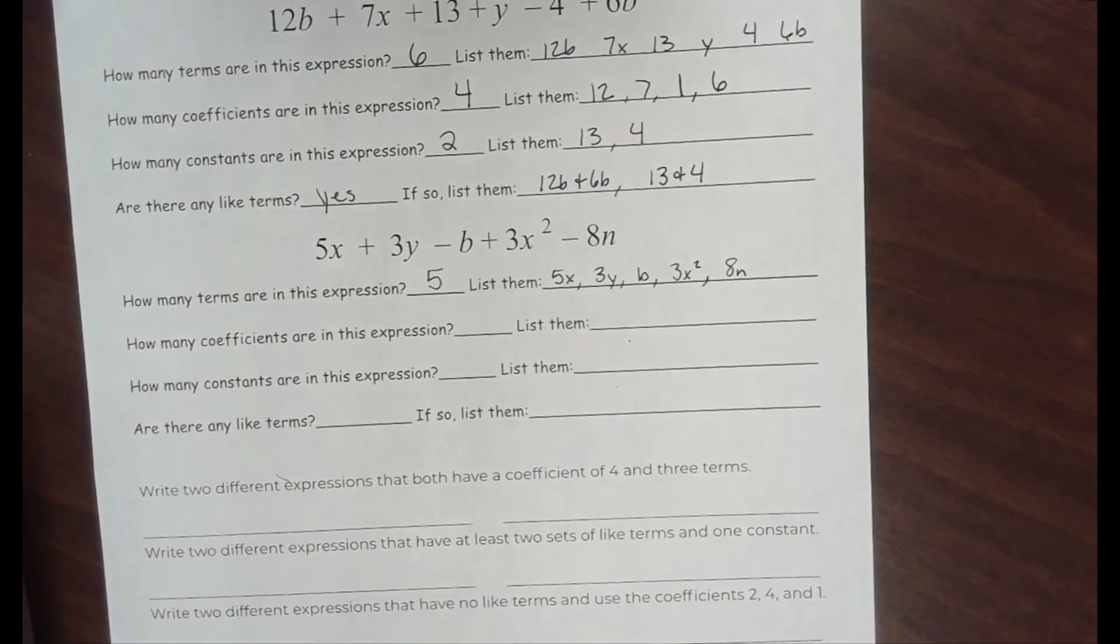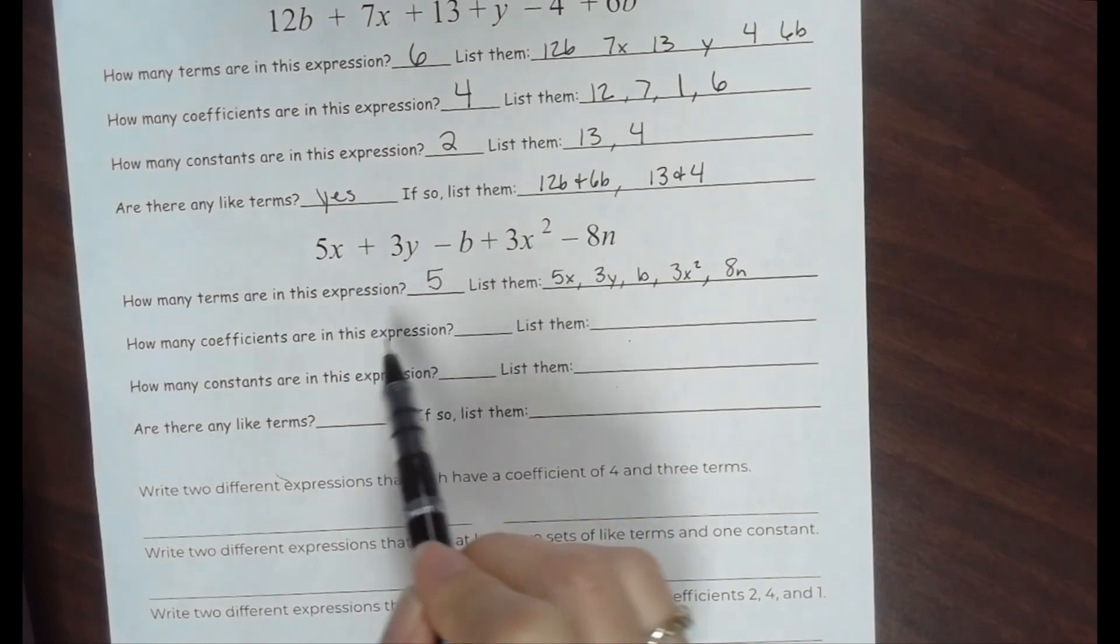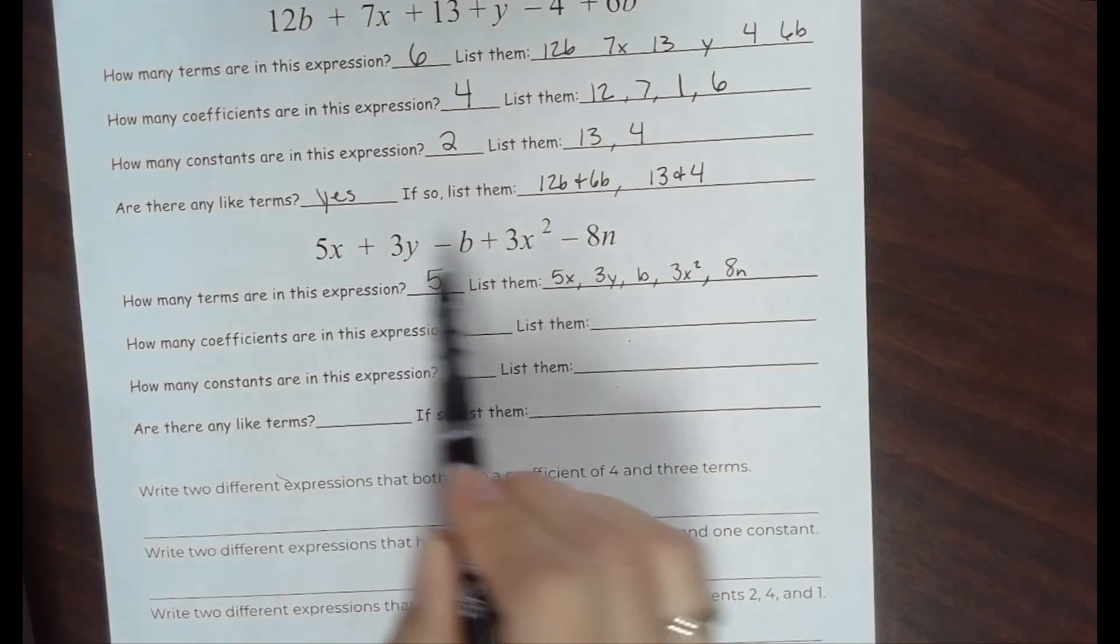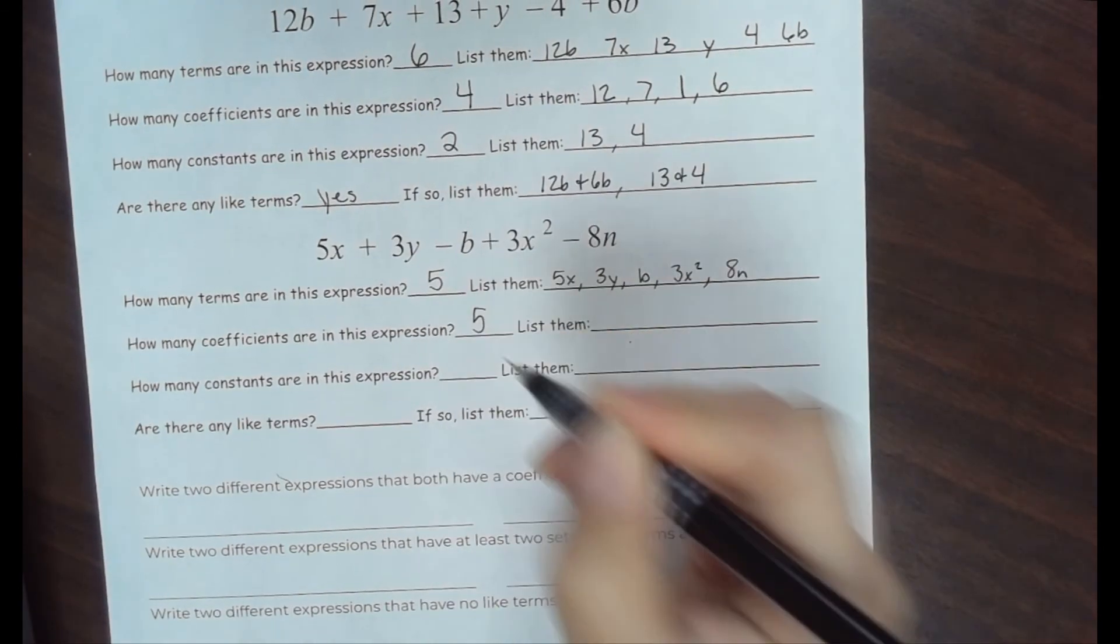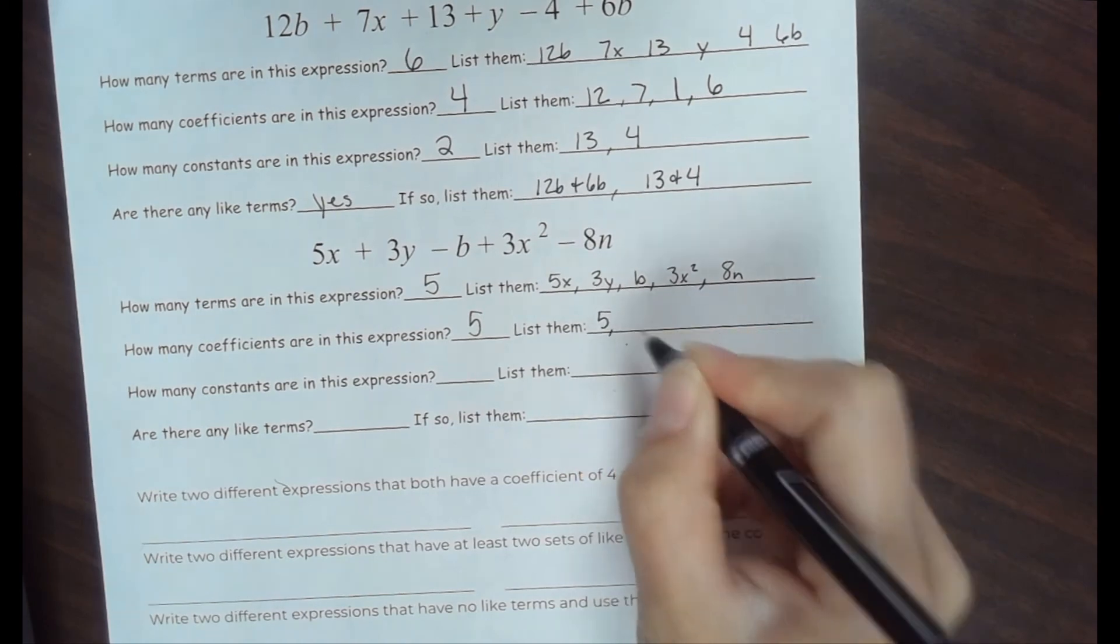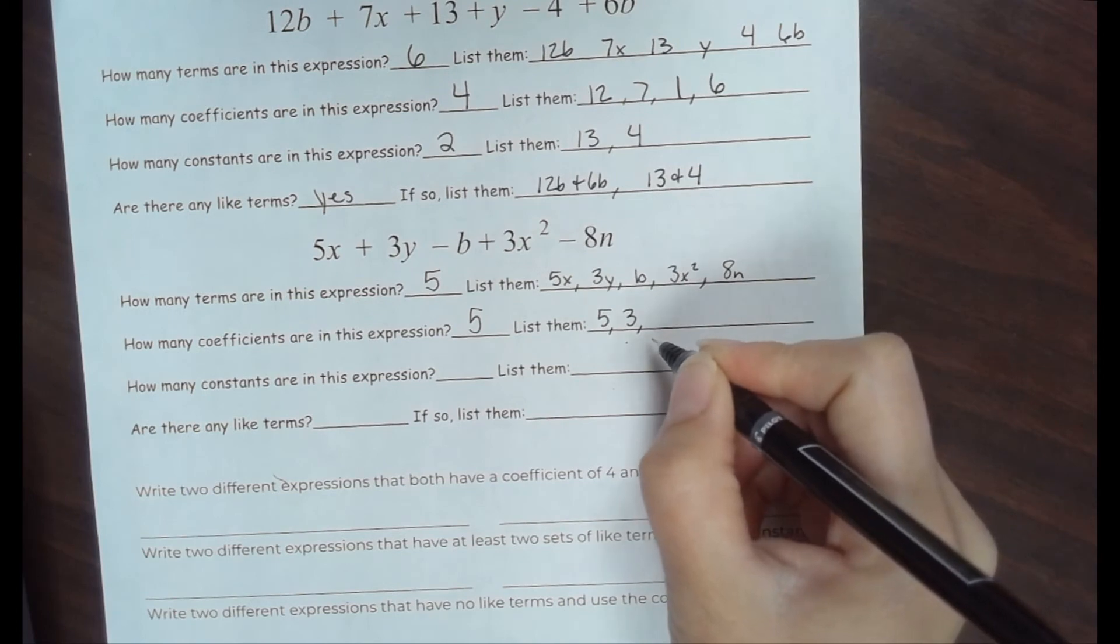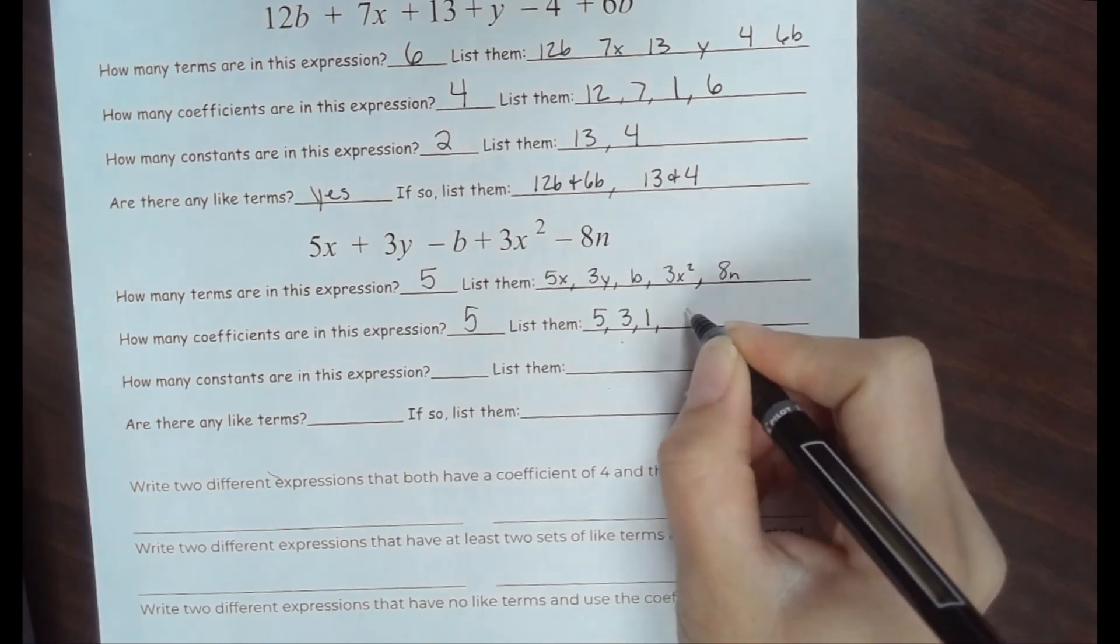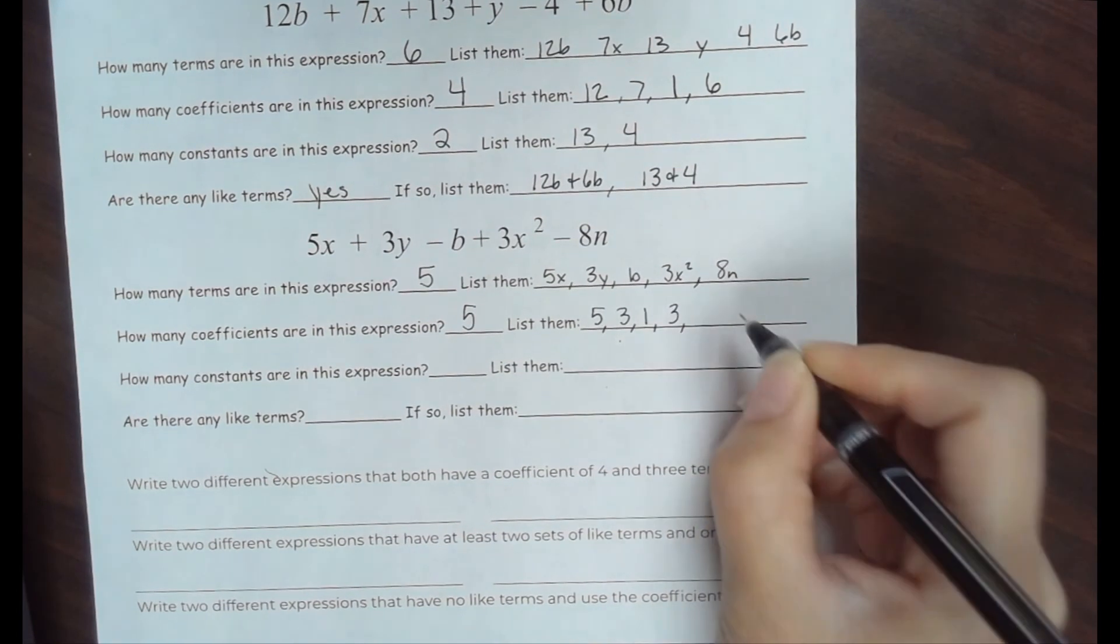How many coefficients are in this expression? A number being multiplied to a variable. Remember, if there's a variable, there's a coefficient. We have 1, 2, 3, 4, 5. The coefficient on the first one is 5. The coefficient on the second one is 3. What's the coefficient on b? 1. Coefficient on 3x squared is 3, and 8.